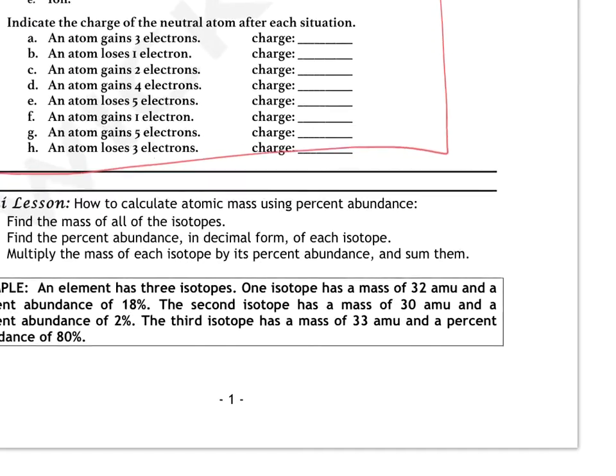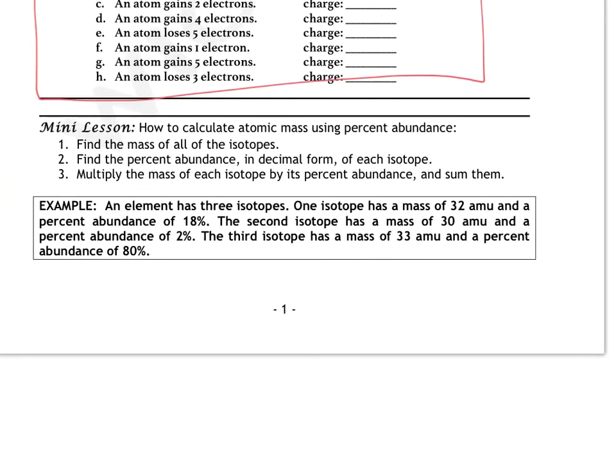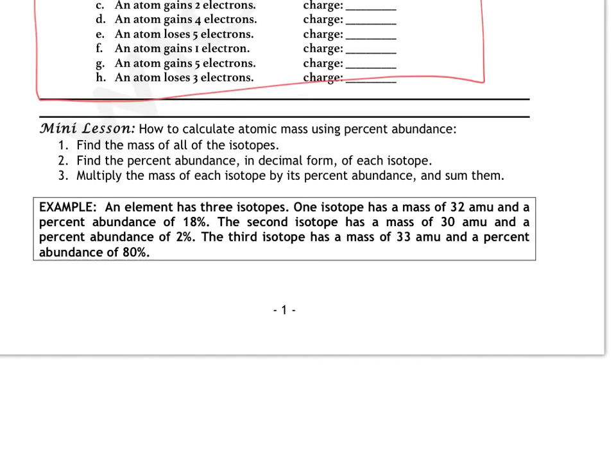So the mini lesson. Today, we are going to focus on three things. We are going to find the mass of all the isotopes of a particular element. And then we'll find the percent abundance in decimal form of each of the isotopes. We'll multiply the mass of each isotope by its percent abundance and we'll sum them. And these are steps that you definitely need in your Cornell notes because those are the steps for finding an atomic mass and that will never change on any question that you do. So it'll always be these three steps. Make sure you have them.